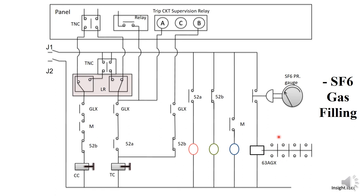This contactor is operated whenever gas is filled inside the circuit breaker and also whenever it has DC supply. There are a few contacts of this contactor — we call it 63AGX or GLX contacts — that are used as interlocks for the closing and tripping circuit of the circuit breaker. You can see the LR switch, that is the local and remote switch. We will understand in detail how this operates, but first let us understand the closing circuit of the circuit breaker.